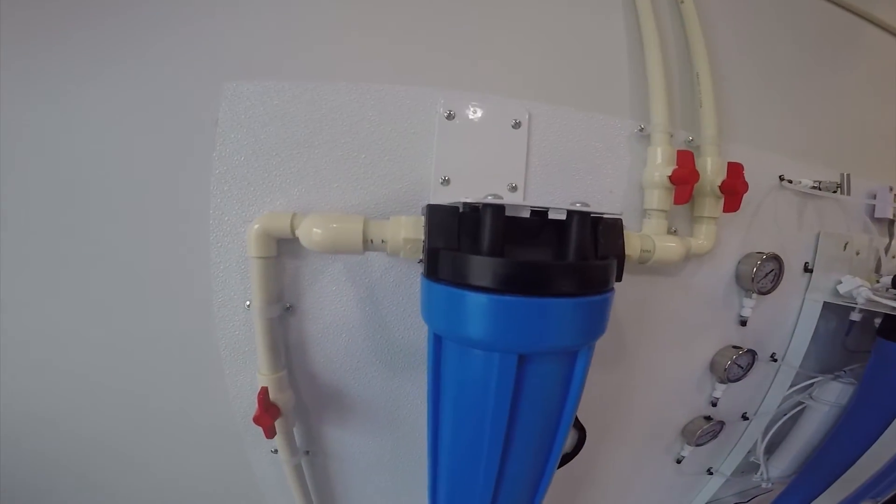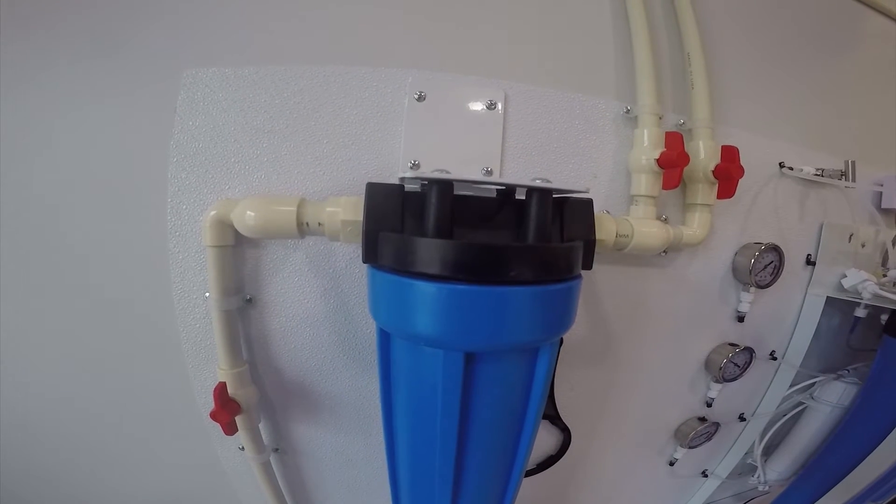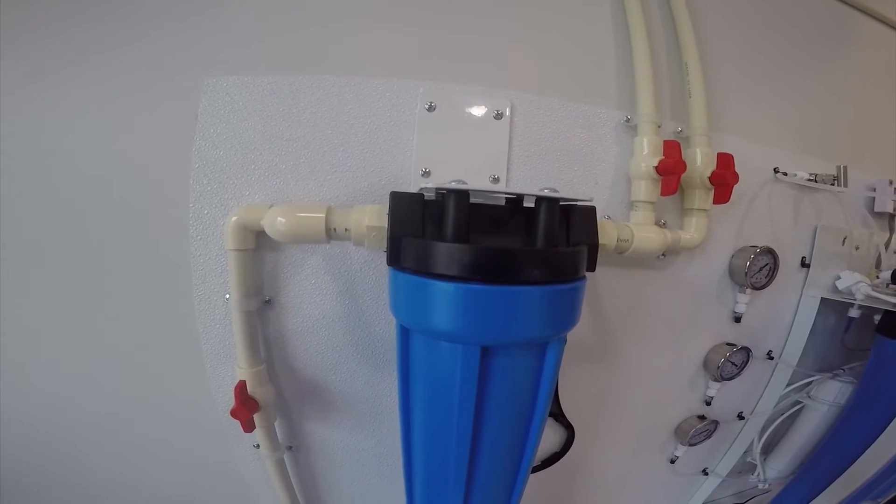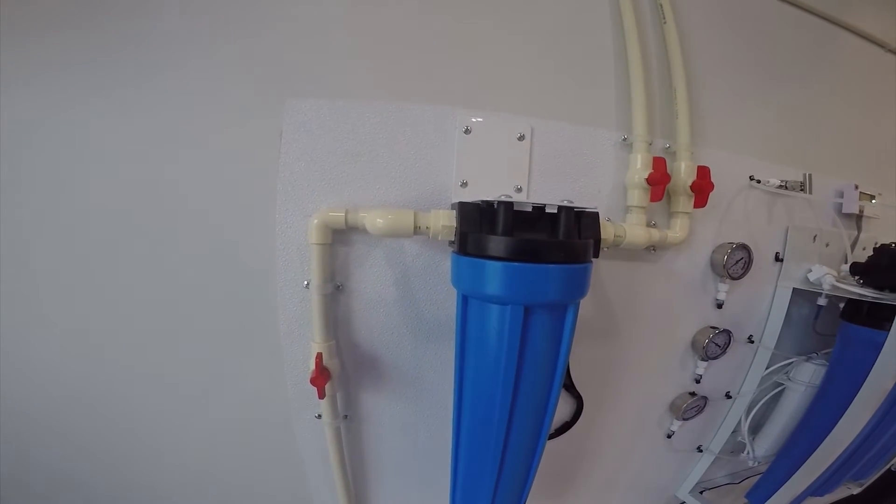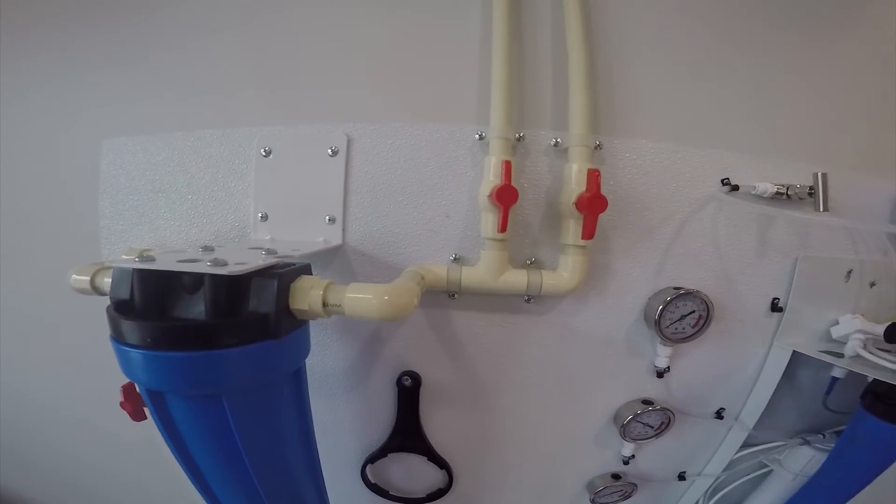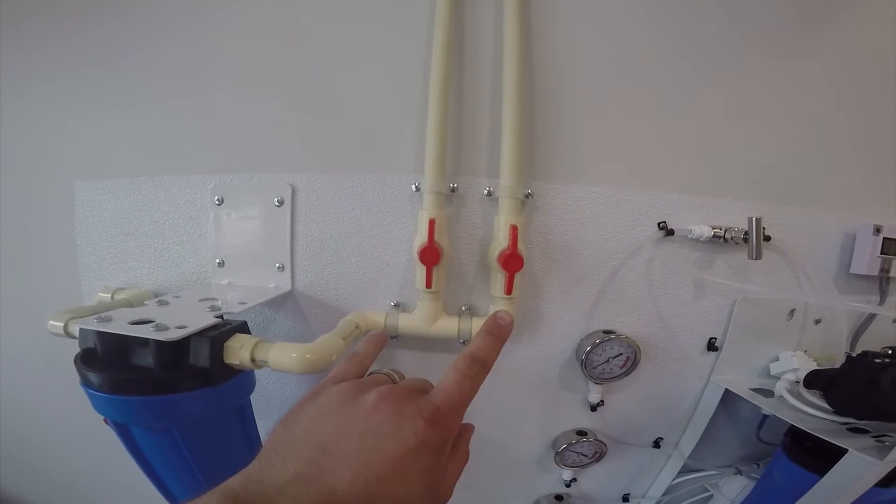From there we keep three-quarter line. It goes to a final GAC filter, an activated carbon filter. This takes out any of the taste that would have been inside the tanks. And then there's a little distributor, and then our lines go up.